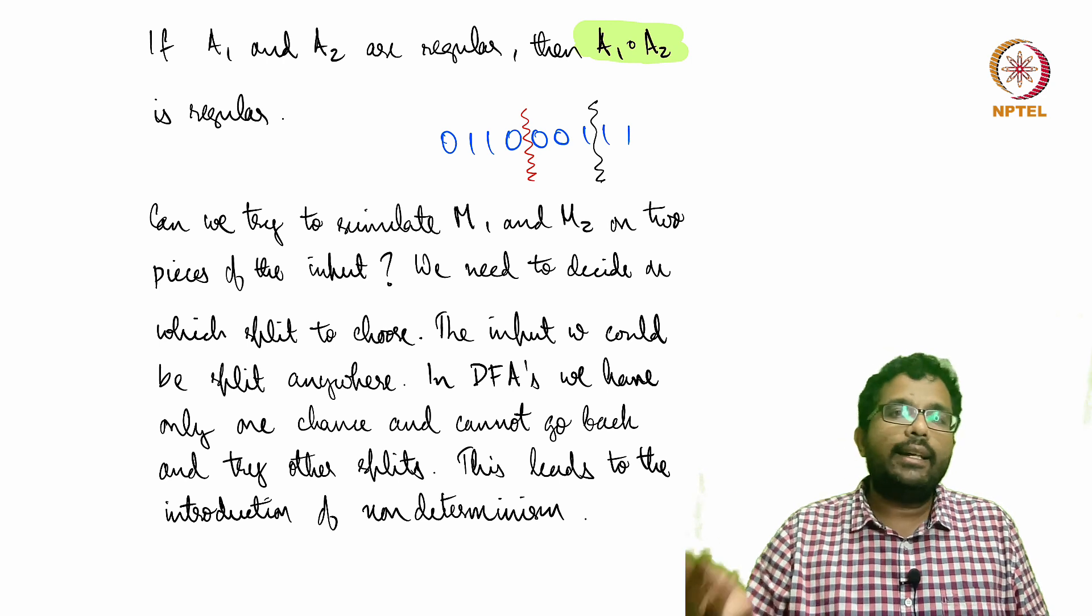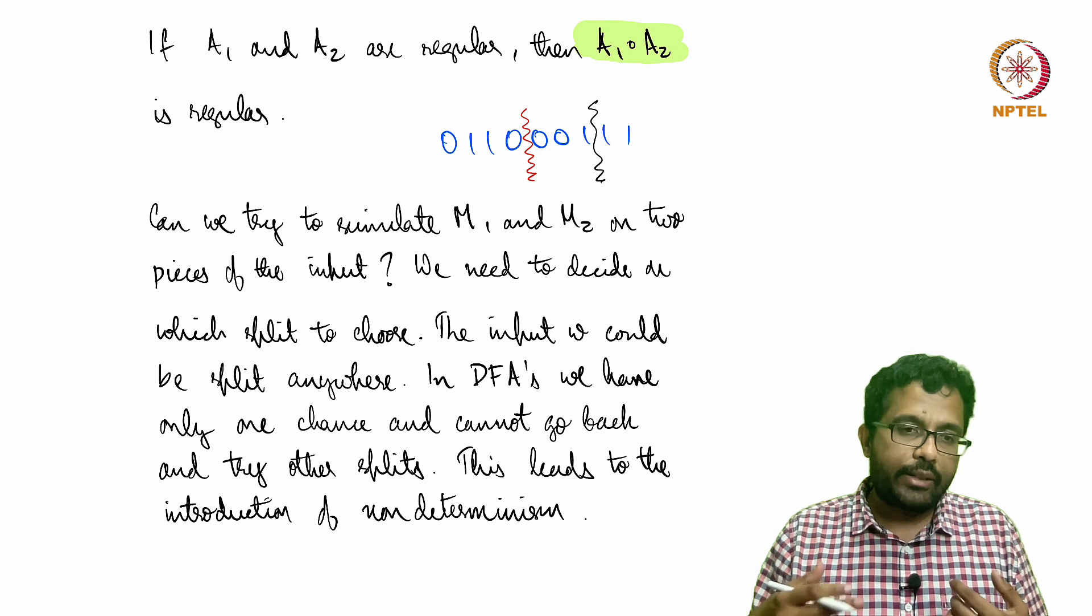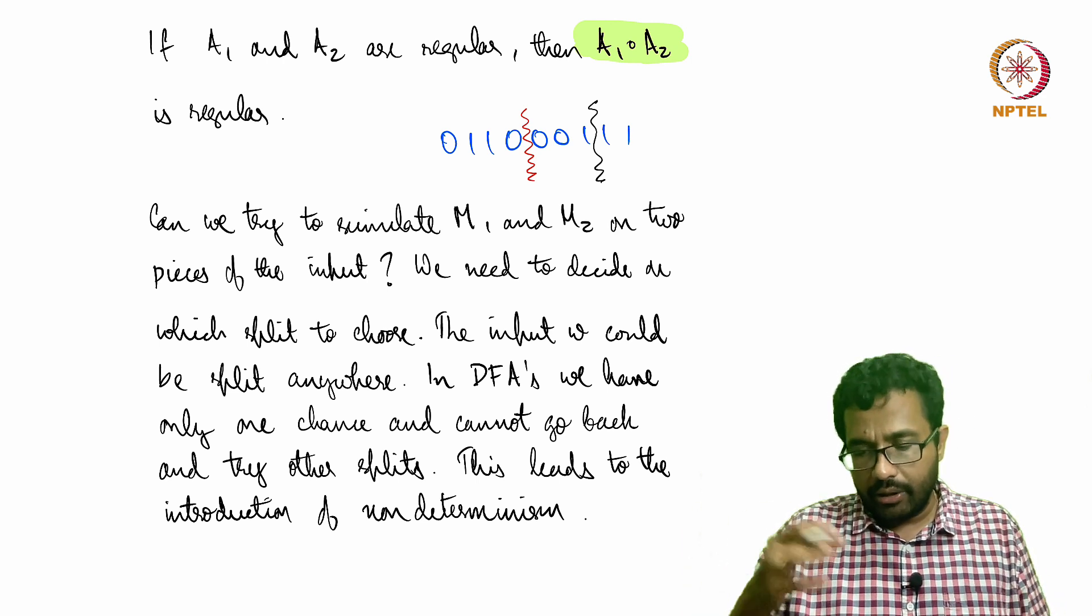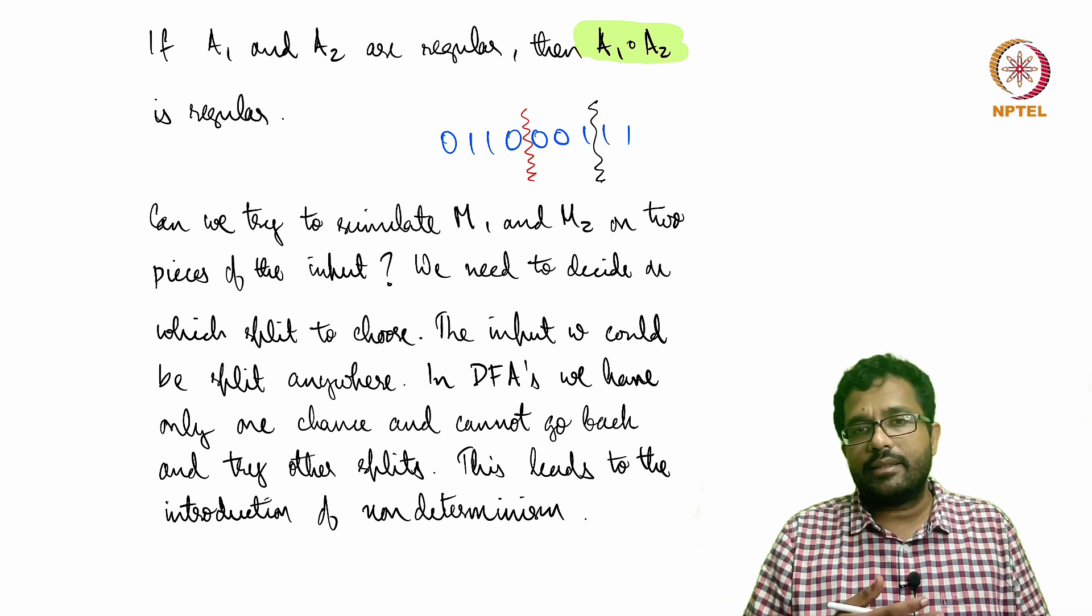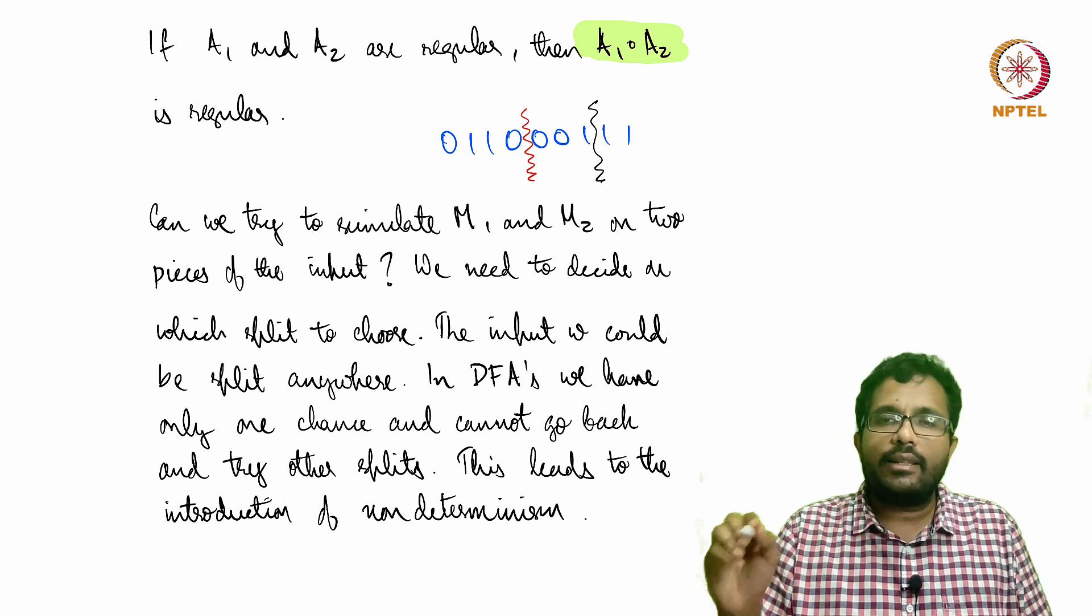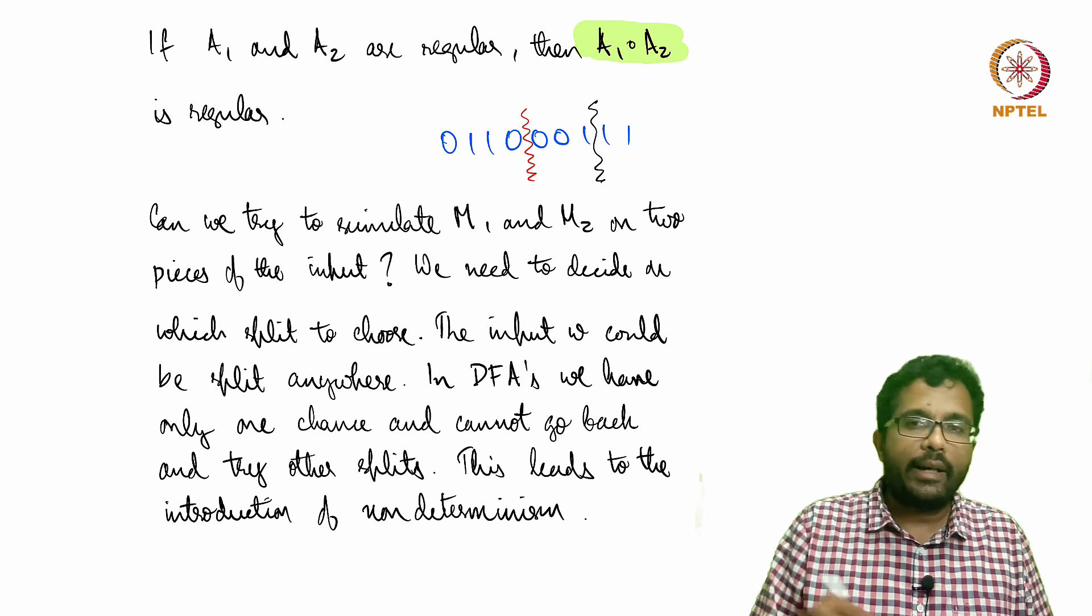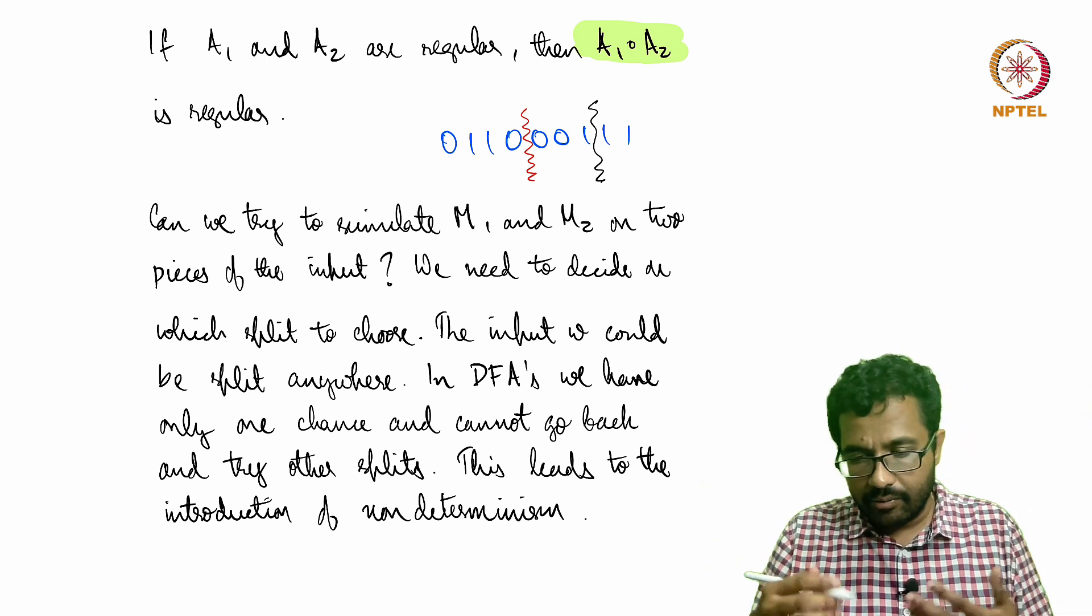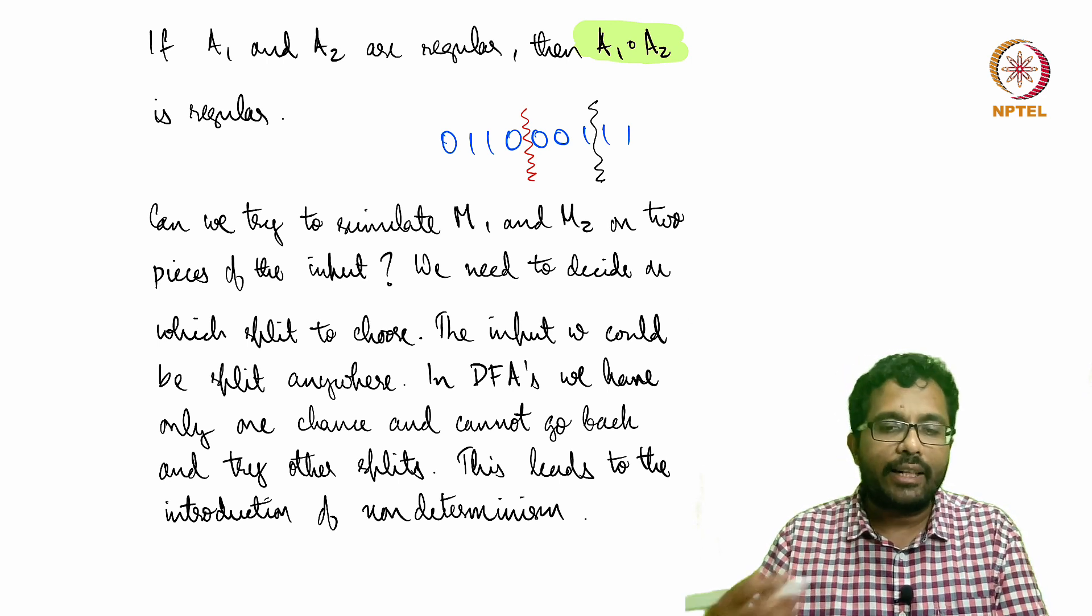Like we saw in the first attempt of trying to show that regular languages are closed under union, we cannot try one split and again go back and try another split. In DFA, you just have one chance to check whether the string is accepted by the DFA or not. We cannot go back and try again. That kind of forces us to think of other approaches.